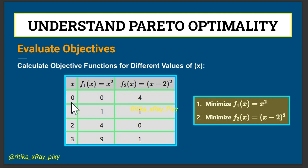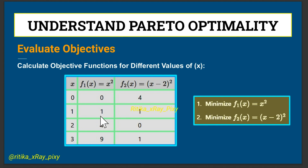For x = 0: f1 = 0, f2 = 4. For x = 1: f1 = 1, f2 = 1. For x = 2: f1 = 4, f2 = 0. For x = 3: f1 = 9, f2 = 1. Now we will determine the dominance. For x = 0, this minimizes the first objective function but gives a higher value for the second.